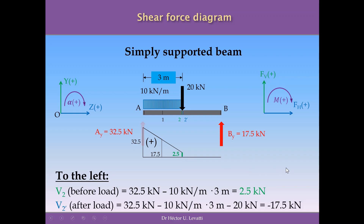At cross-section 2 prime, which is exactly after the point of application of the 20 kN load, we have 32.5 kN minus 10 kN/m times 3 m, minus 20 kN — because the punctual load is now to the left of cross-section 2 prime. Running this calculation gives minus 17.5 kN, which is the value of the shear force just after the load. We sketch this value on the opposite side of the reference line because it is negative.